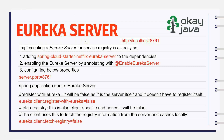To create a Eureka Server, while creating a microservice we have to add a dependency called spring-cloud-starter-netflix-eureka-server. Then we have to enable the Eureka Server by using the annotation @EnableEurekaServer.